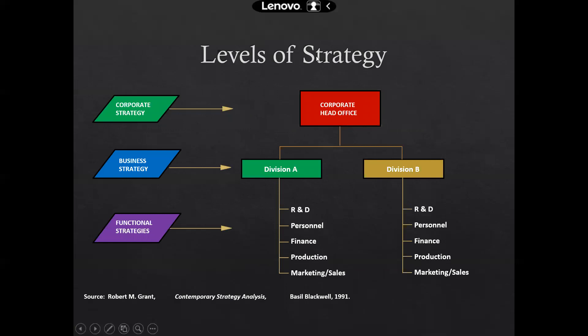For example, in a corporate organization, we have a corporate office at the top, then certain divisions, and then functional departments. The head office develops a corporate strategy, which is a long-term strategy. They look at what they are going to achieve within the next five, seven, or ten years — what direction they should be heading and which further divisions or departments they should open to comply with market requirements.